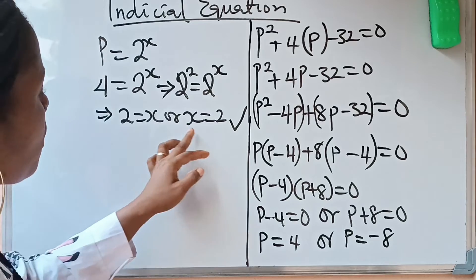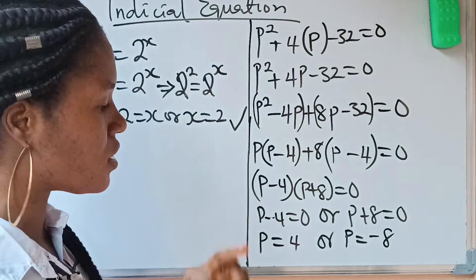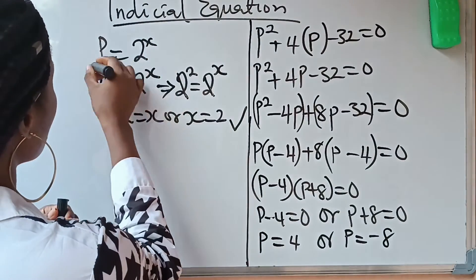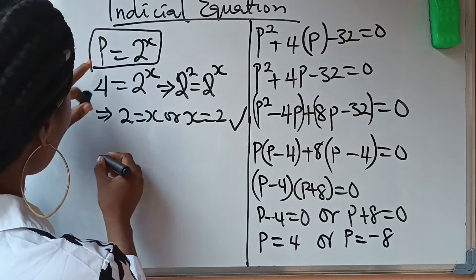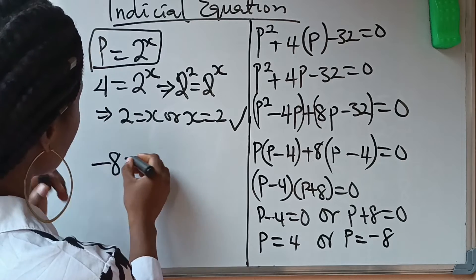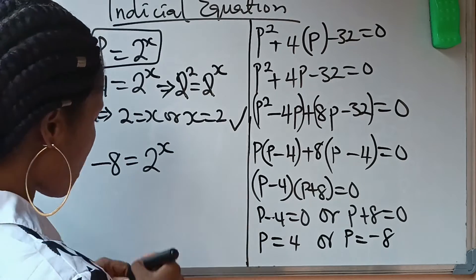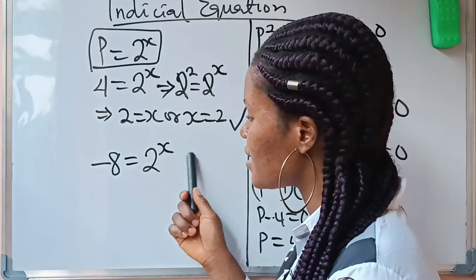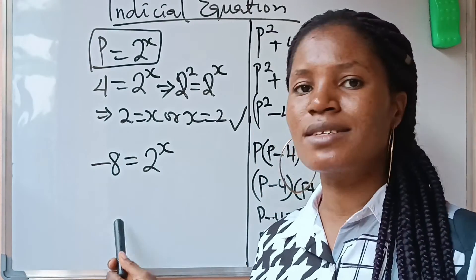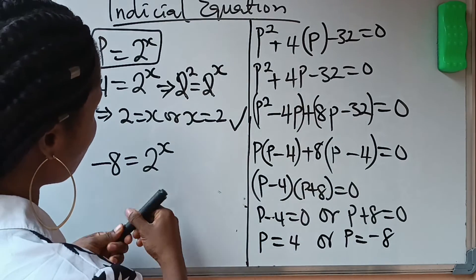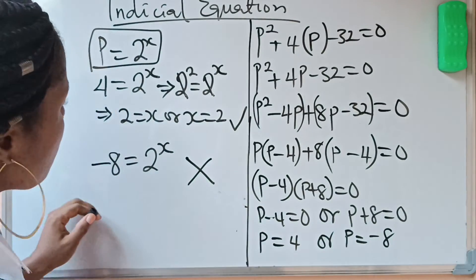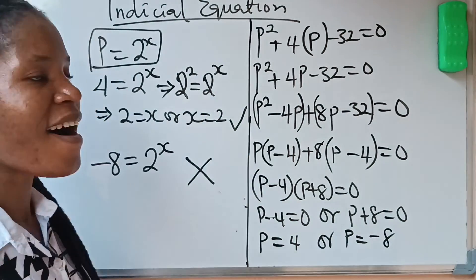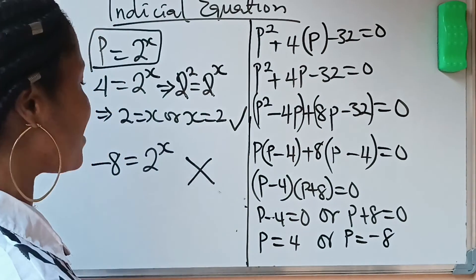We have succeeded in getting one value of x. The next one says p equals minus 8, so we say minus 8 equals 2 raised to the power of x. But there is a problem: there is nothing you can raise to the power of x that will give you minus 8 as the answer. That particular solution is not feasible — it's not possible. So the only value of x is 2. Have a lovely day and bye!